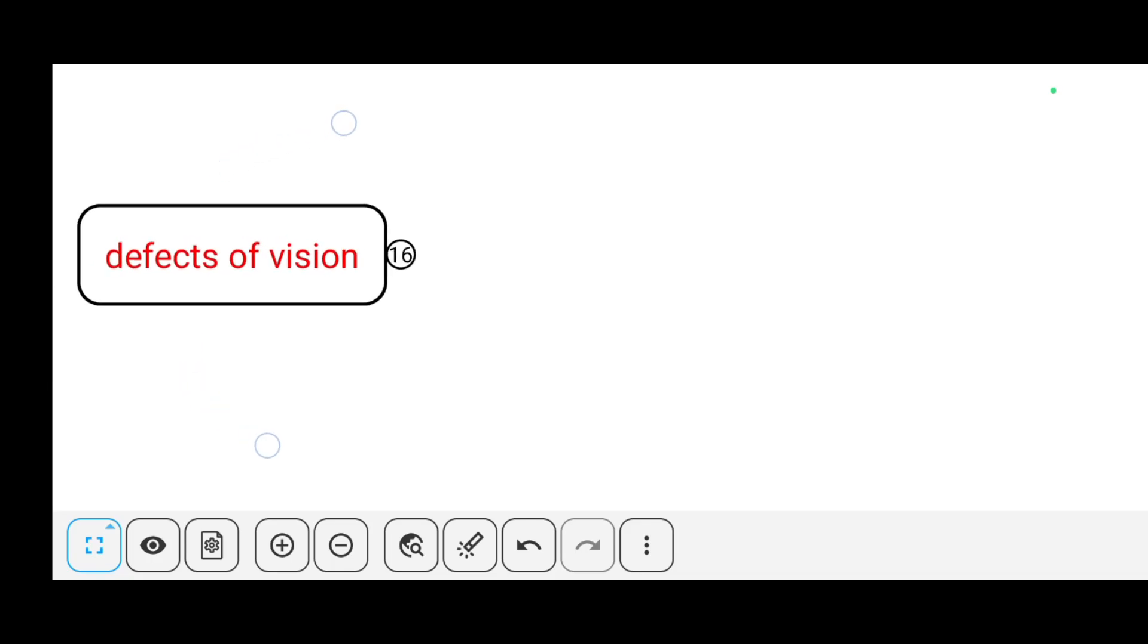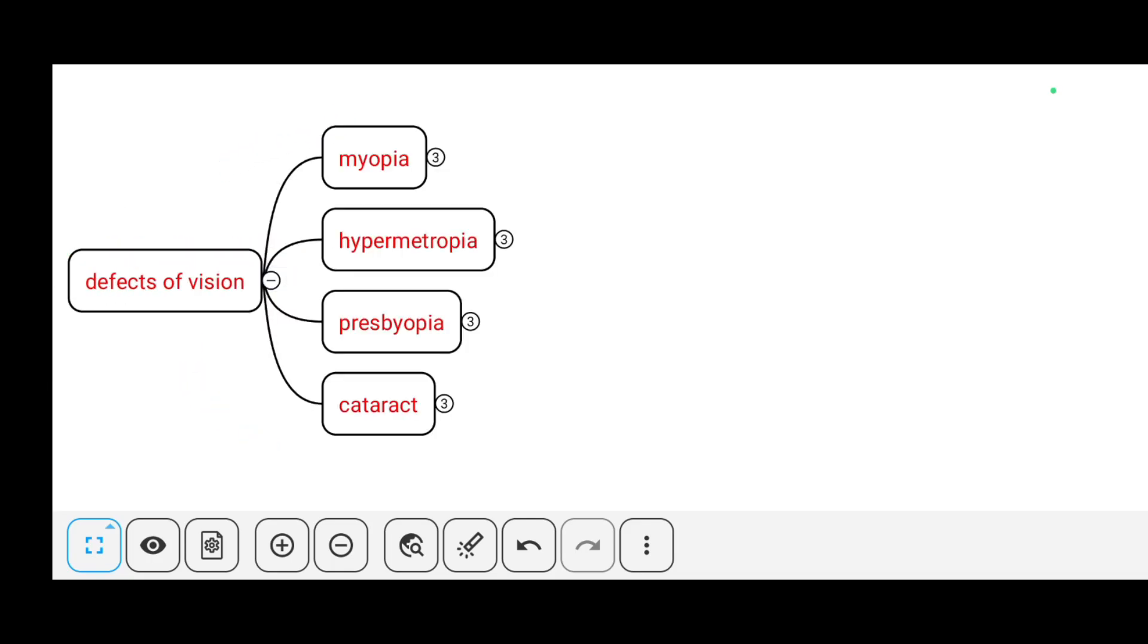Hi everyone, in this video I'll discuss the defects of vision. There are basically four types of defects: myopia, hypermetropia, presbyopia, and cataract. Let us see each defect separately.